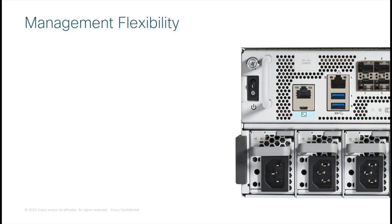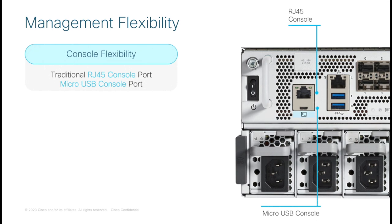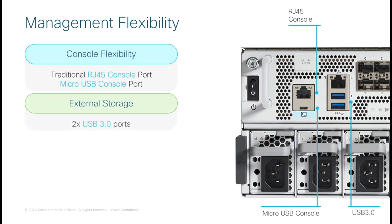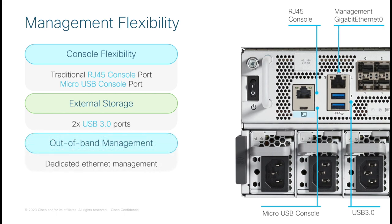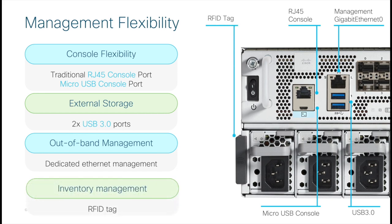In addition to the networking interfaces, the front side of the C8500 20X6C also has the standard set of management connectivity options. This includes an RJ45 and micro-USB based console port, though only one of these console connections can be active at a time. Two USB-A 3.0 interfaces are present to transfer configurations, software, logs, packet traces, and other files. There is also a management Ethernet connection which can function independent of the router's data plane, and an option to include a passive RFID tag for easy inventory management.